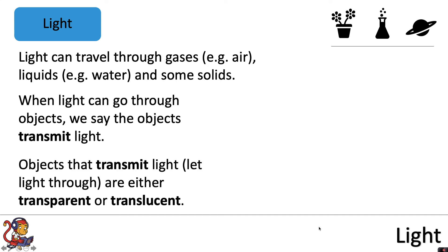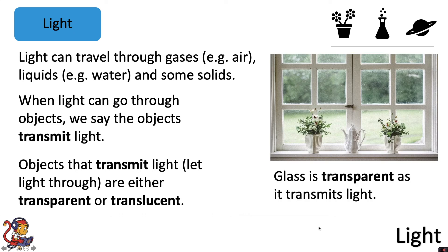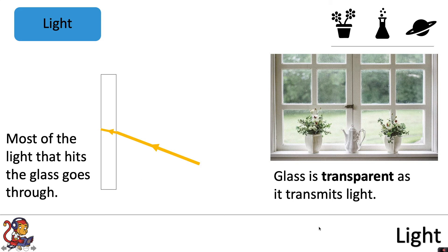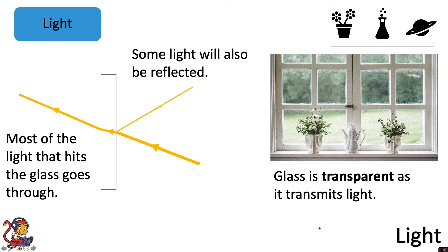Objects that transmit light are either transparent or translucent. Glass is transparent as it transmits light. Most of the light that hits the glass goes through. Some light will also be reflected.